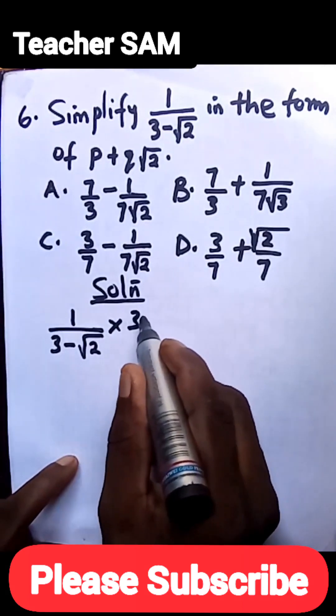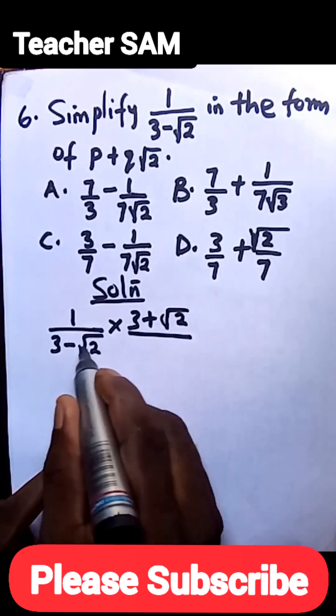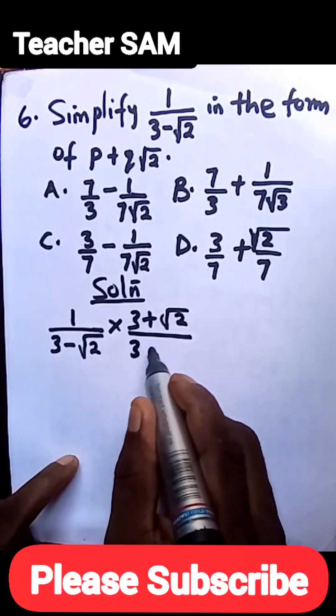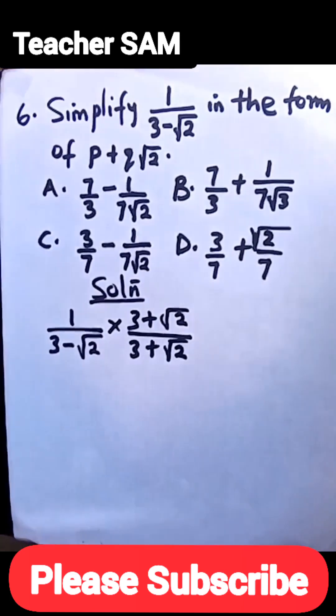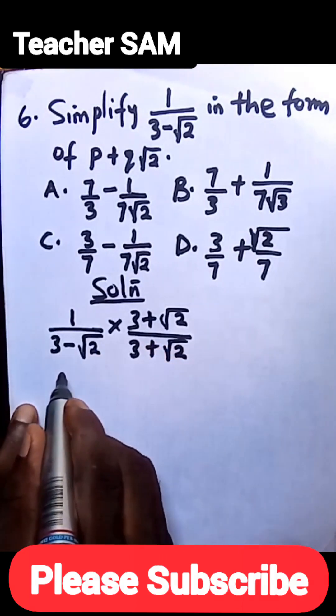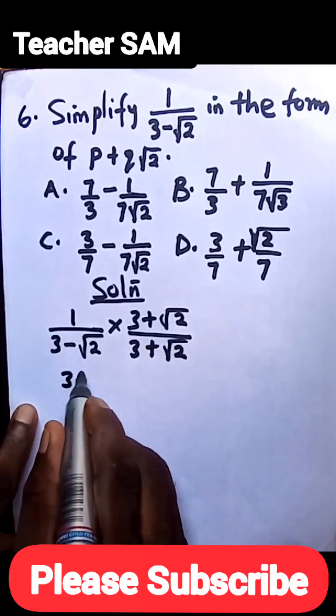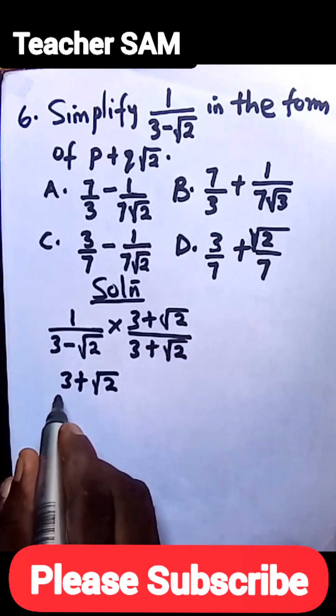So we have 3+√2. We multiply the top: 1 times the whole of this gives us 3+√2, now divide by...